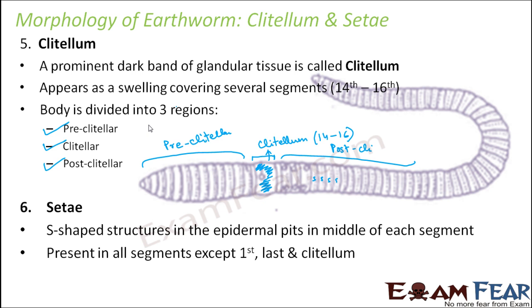Setae are absent from the peristomium (first segment), the last segment, and the clitellum. Everywhere else, setae are present and help in locomotion. These S-shaped structures act like hooks — small tiny hooks — that help to anchor and control the worm while moving through the soil. Whenever the earthworm crawls on the soil, the setae anchor the soil, hold it, and then control the worm's movement.